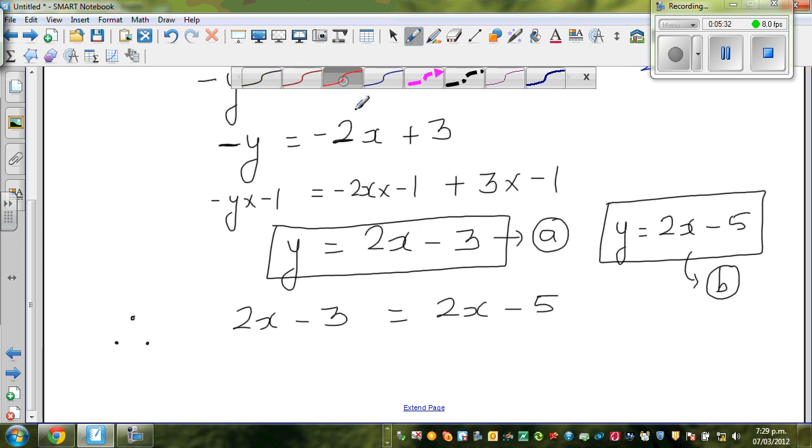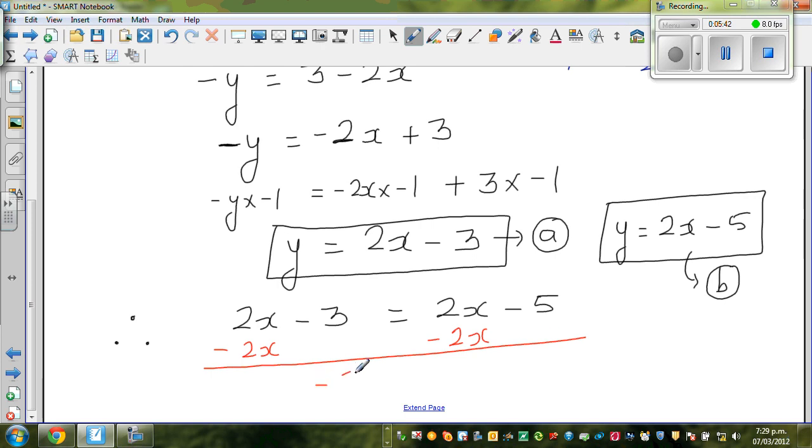If you take away 2x from this side, you have to take away 2x from this side. This whole thing will become negative 3 is equal to negative 5. Now this is not possible.